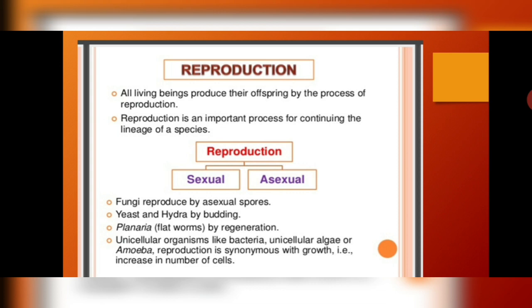For unicellular organisms, reproduction is synonymous with growth — they increase in the number of cells. The number of cells increases, meaning they are growing and reproducing at the same time.